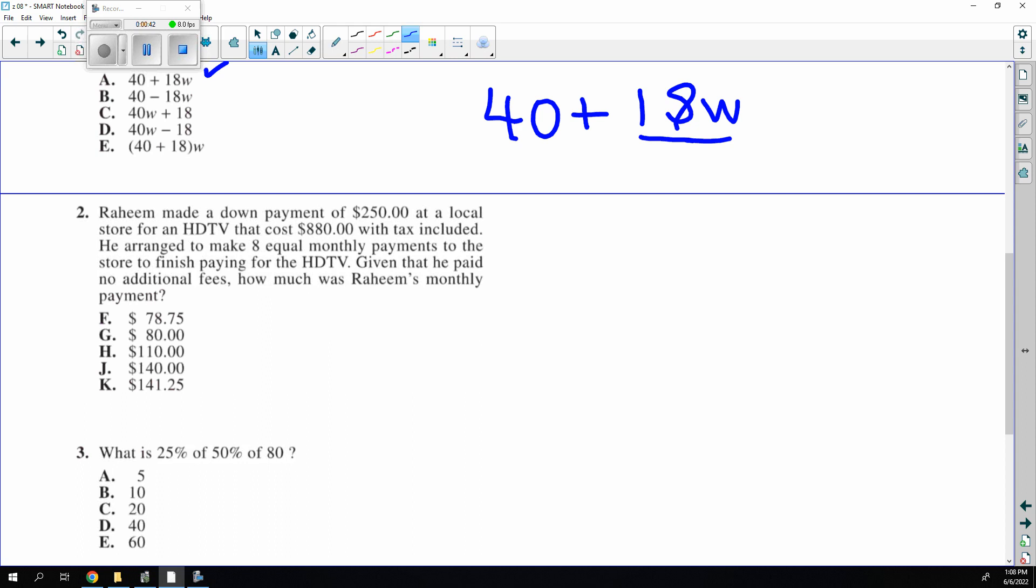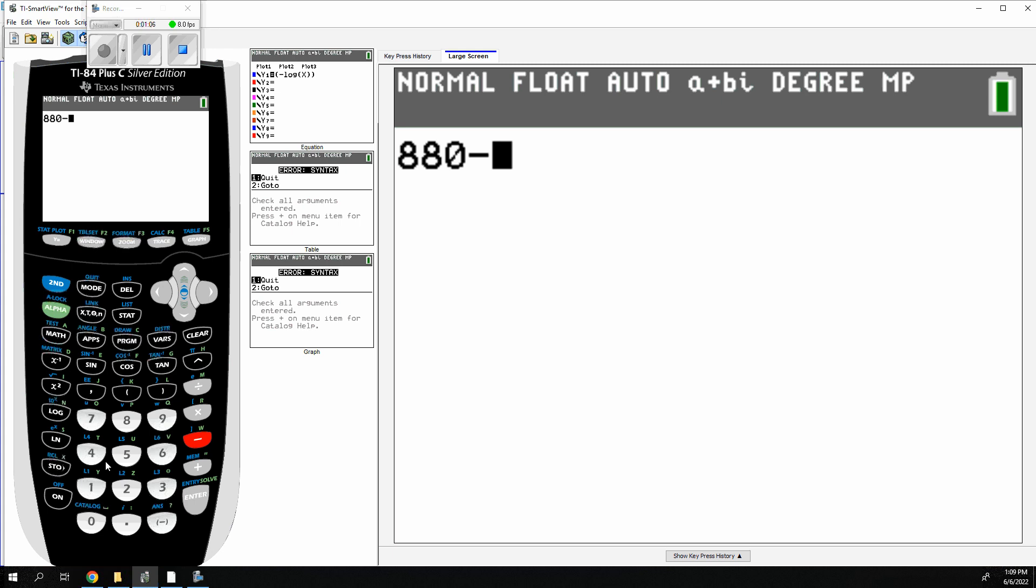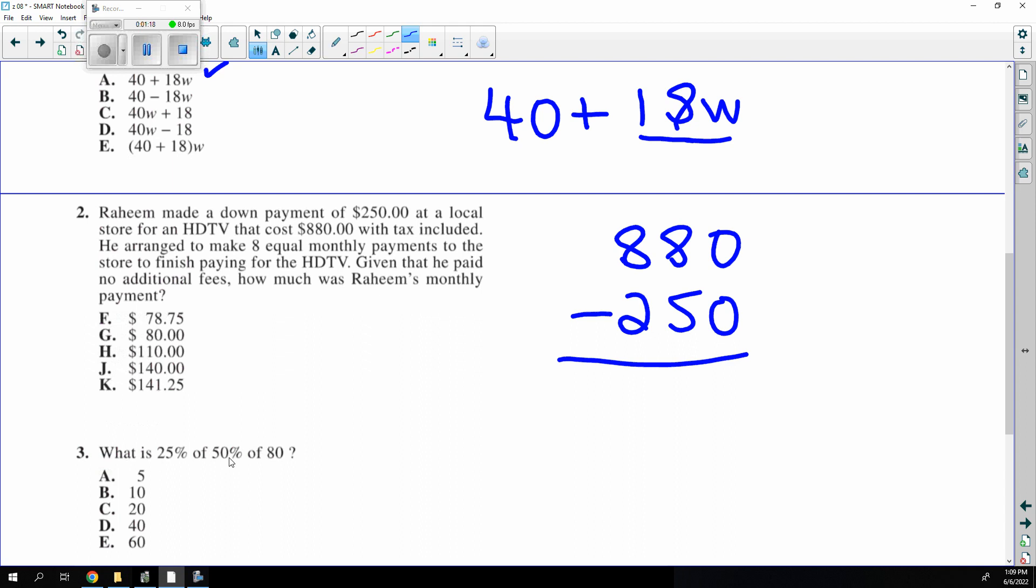He made a down payment of $250. A down payment reduces how much you owe. So the cost was $880 and he's going to make a down payment of $250. So it would be $880 minus $250 to see how much is left. That would be $630 and he's going to make eight payments. So we divide by eight and that gives you the amount of the payment. Answer F.